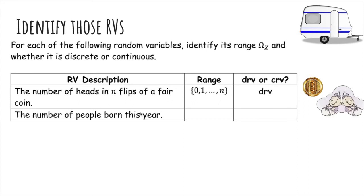Number of people born this year. That can be anywhere from zero, one, two, and there's really no upper bound. So it's the non-negative integers, and it's also a discrete random variable because it's a subset of all the integers.